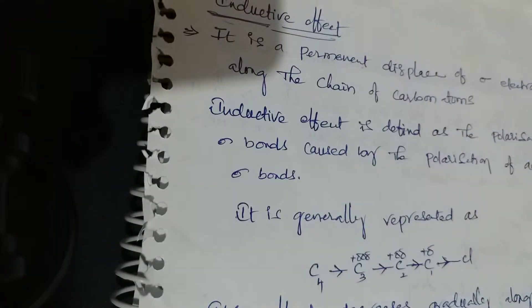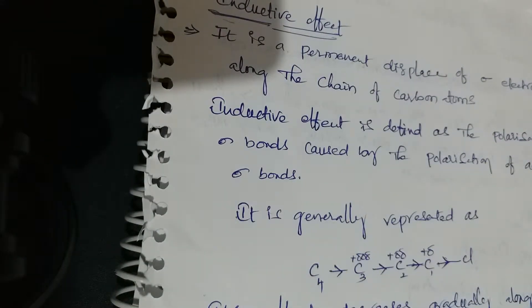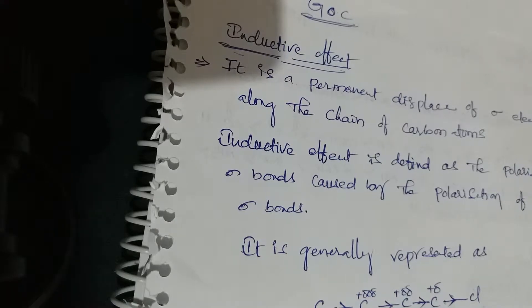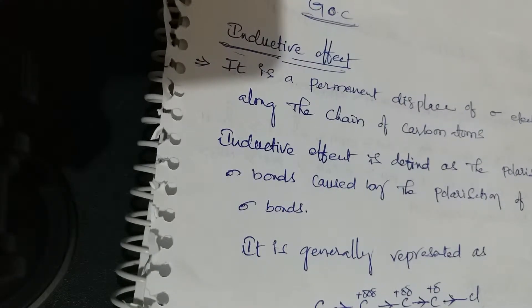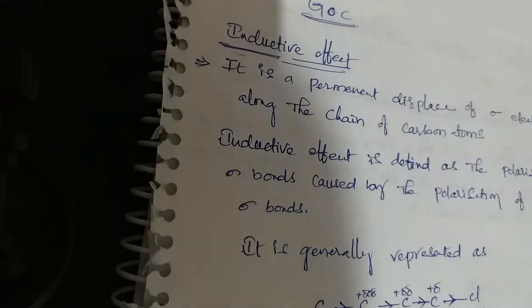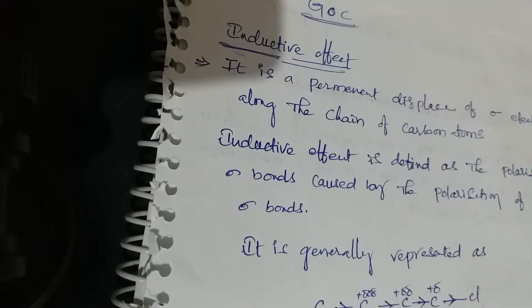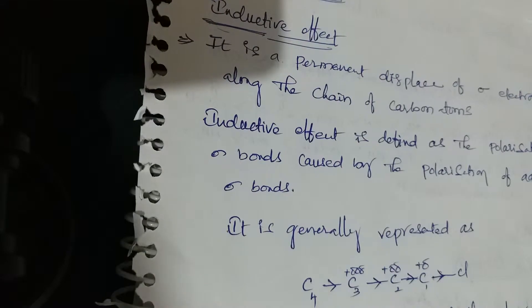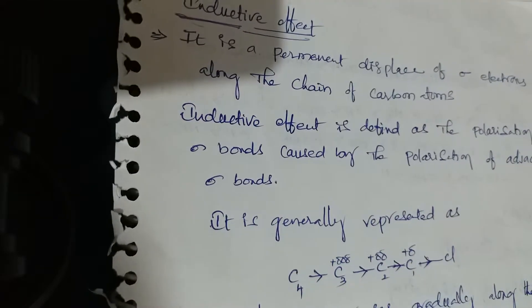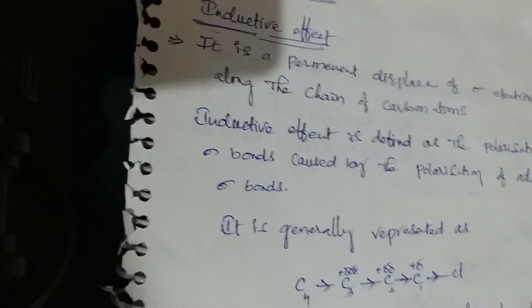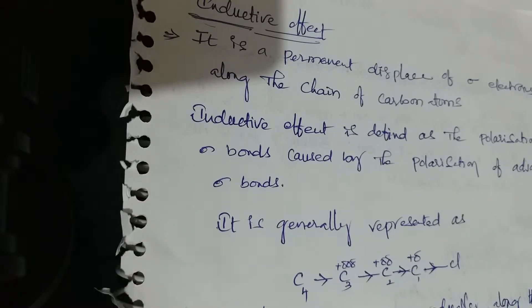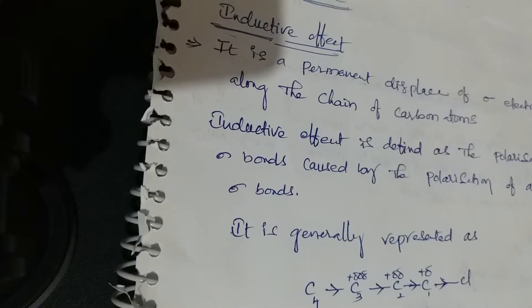Hello students. Now the important topic is organic chemistry — general organic chemistry. The first topic is the inductive effect. The inductive effect is defined as the polarization of a sigma bond caused by the polarization of adjacent sigma bonds.